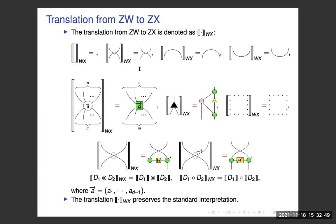The translation also works in the other direction, from ZW to ZX. It is quite similar to the qubit case: the W node translates into ZX using a bigger triangle, and the crossing translates to a higher-dimensional control-Z with a swap.